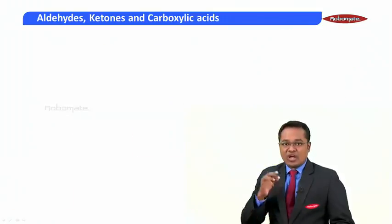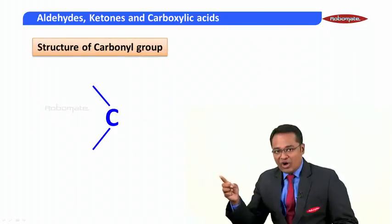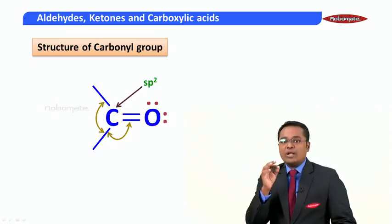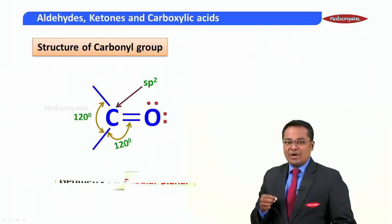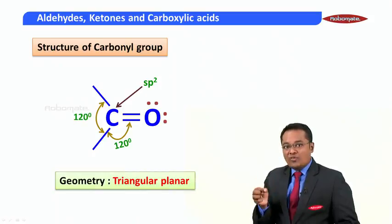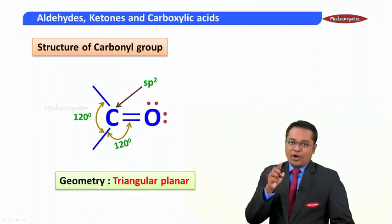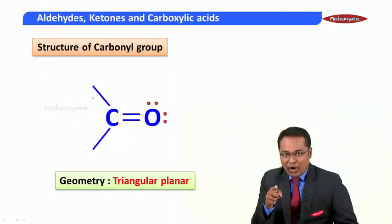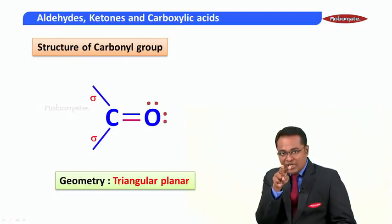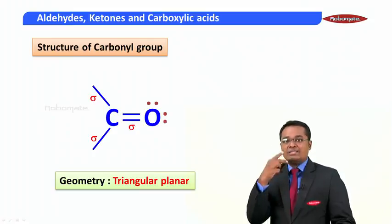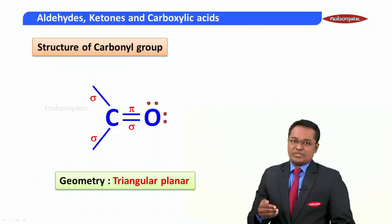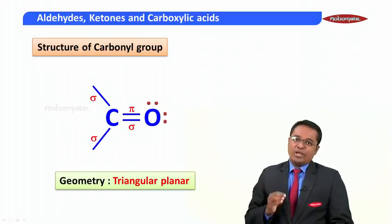Let us move to the next topic, which is the structure of a carbonyl group. The carbon atom is sp2 hybridized and the bond angle is 120 degrees. The geometry of this group is trigonal planar. The two single bonds on the carbon atom are sigma bonds, and between the carbon and oxygen, one bond is a sigma bond and the second bond is a pi bond. This concludes what we discussed in this particular module. Thank you very much.